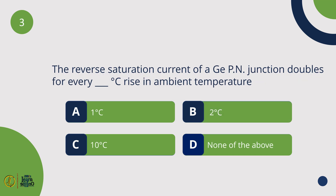The reverse saturation current of a germanium PN Junction doubles for every 10 degrees Celsius rise in temperature.